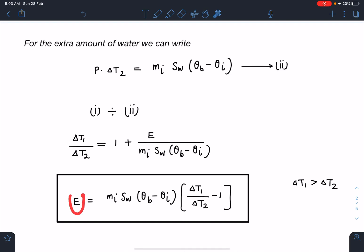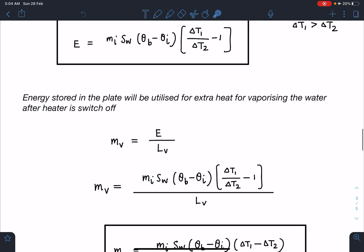This is the amount of energy absorbed by the plate. Once the heater is switched off, the plate is going to supply this energy further, and that is going to convert some extra water into vapor. Now we have to use the concept of latent heat because phase change is taking place. This energy must equal mass of water vaporized times latent heat of vaporization.